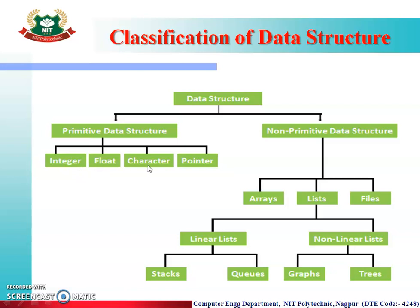The four primitive types are integer, float, character, and pointer, which we often use in programming. Non-primitive data structures include array and others we implement in programming. Non-primitive data structures are classified into two categories: linear data structures and non-linear data structures. Linear data structures include array, queue, and stack. Non-linear data structures are classified into graph and tree.